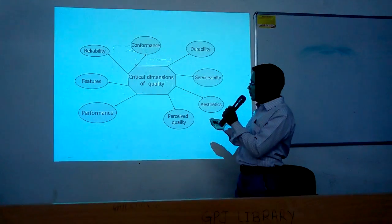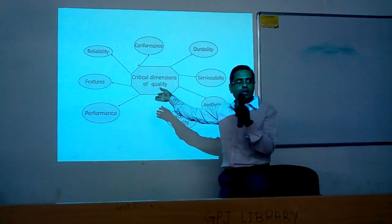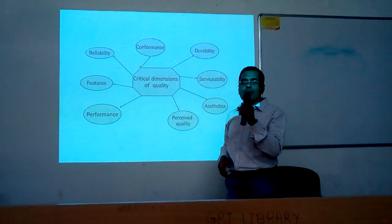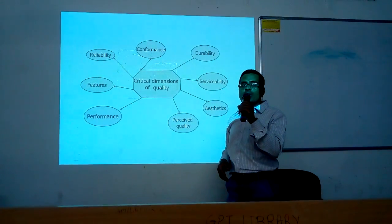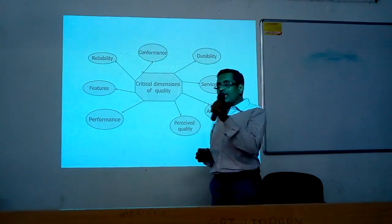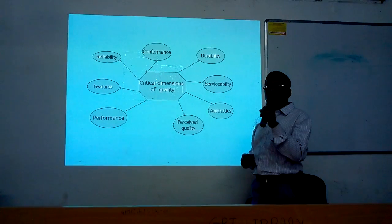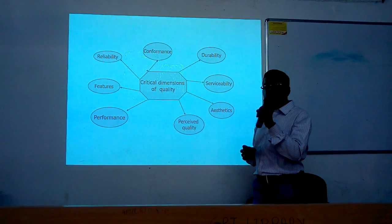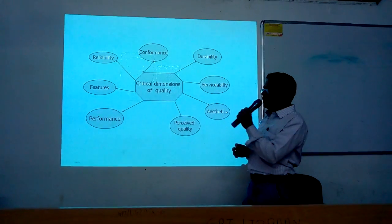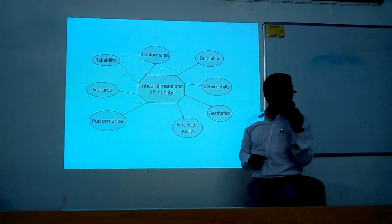Features for any product are different — it depends on the product. Reliability is the ability of the product to perform satisfactorily throughout its life under given environmental conditions. Conformance means whatever the manufacturer has specified in the style manual, those features should be observed in performance. Durability means it should have a longer life. Serviceability means it should be easily serviceable.